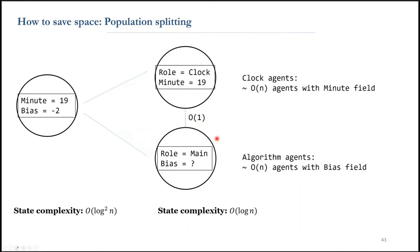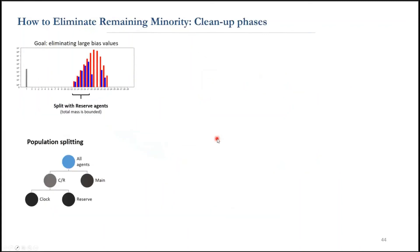So we split the population into main clock and also reserve agents at the beginning of our protocol. The reserve agents are extra neutral agents whose whole goal is to help agents split with the leftover minorities with large biases.